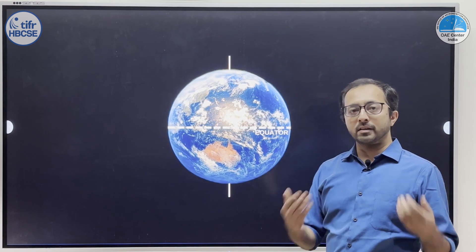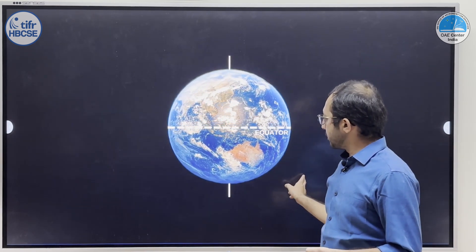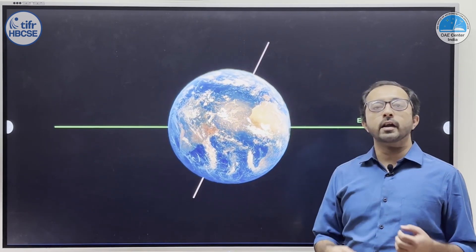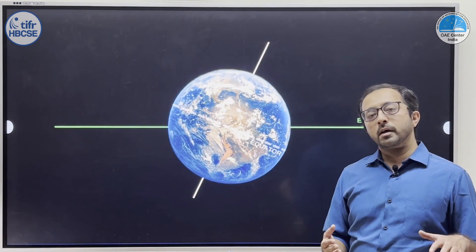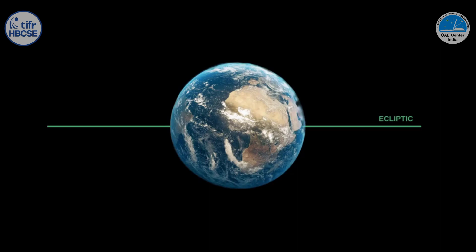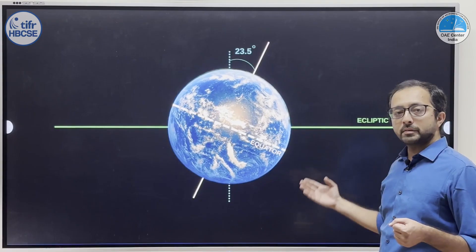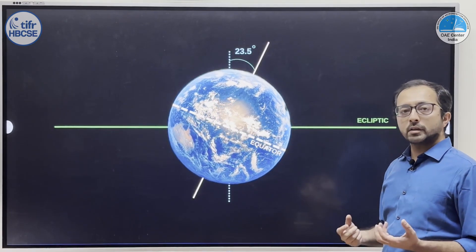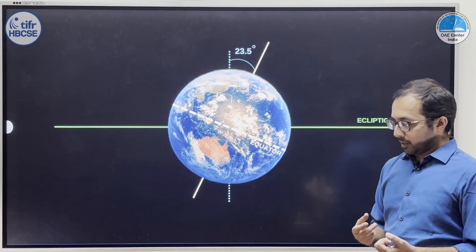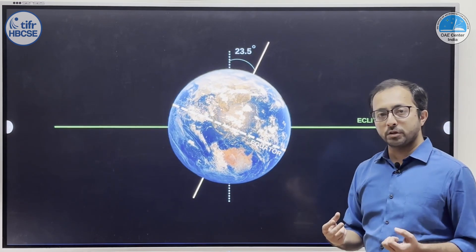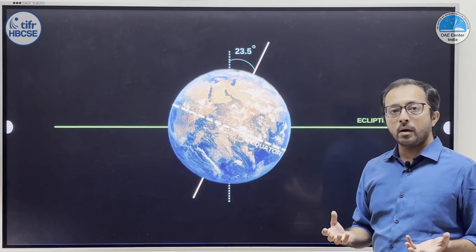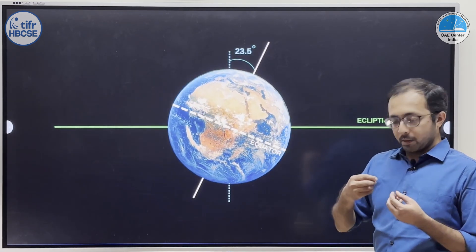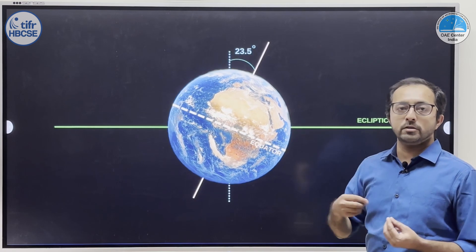The earth has another motion. That motion is called as revolution. The earth revolves around the sun in a plane. This plane is represented by the green line. It is called as ecliptic — this is the plane in which the earth revolves around the sun. The rotation as well as revolution happen in the same manner; when we look from above, both appear to move in an anti-clockwise fashion.